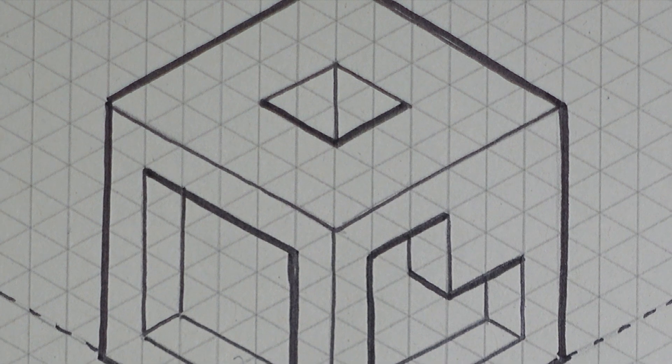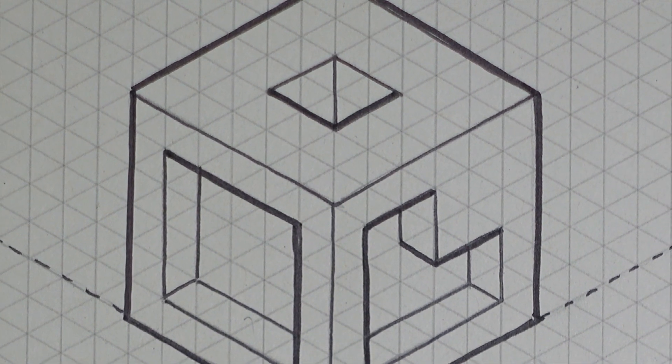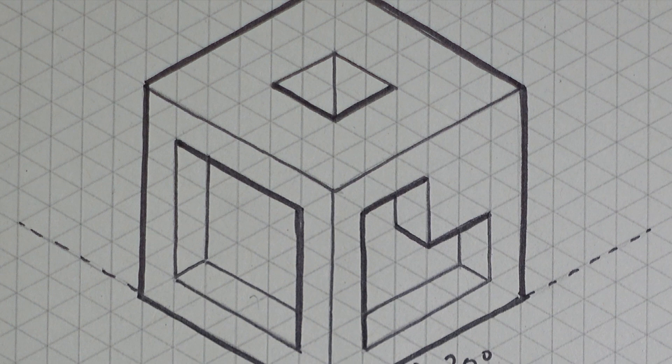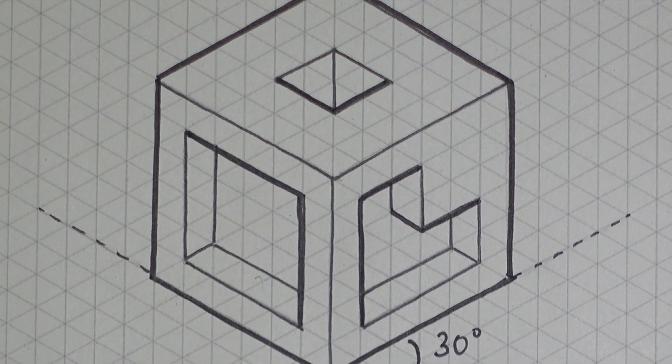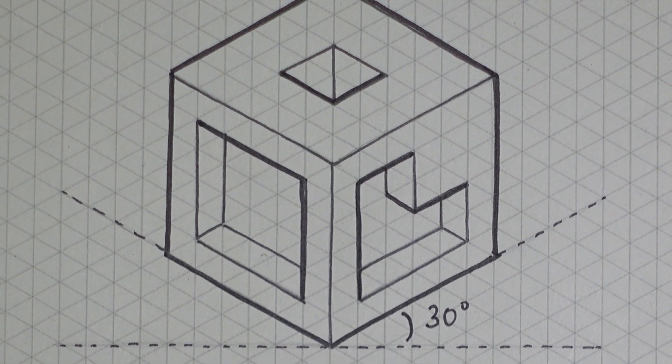Thinner lines are typically used for internal details and less prominent edges. This technique enhances the clarity of the sketch, allowing viewers to easily distinguish between different parts of the object.